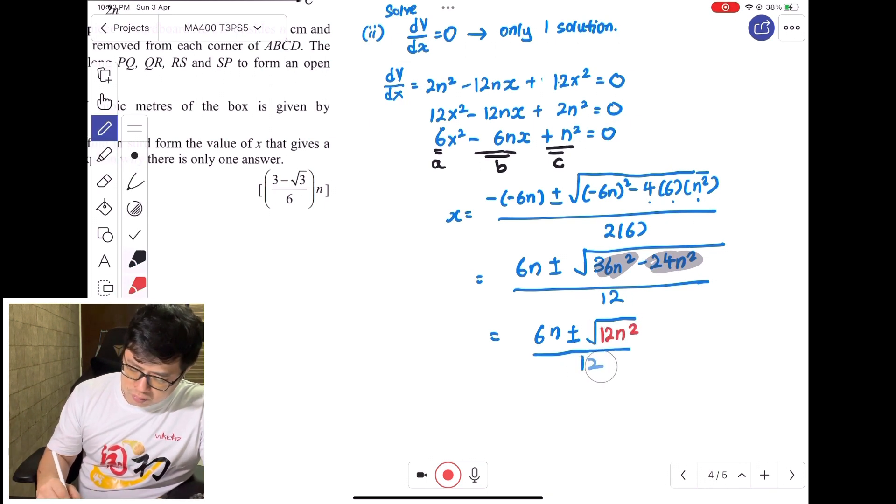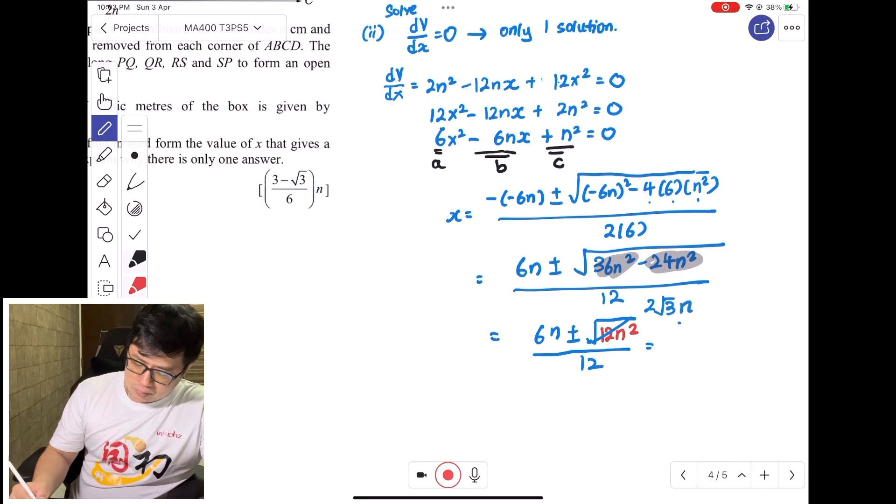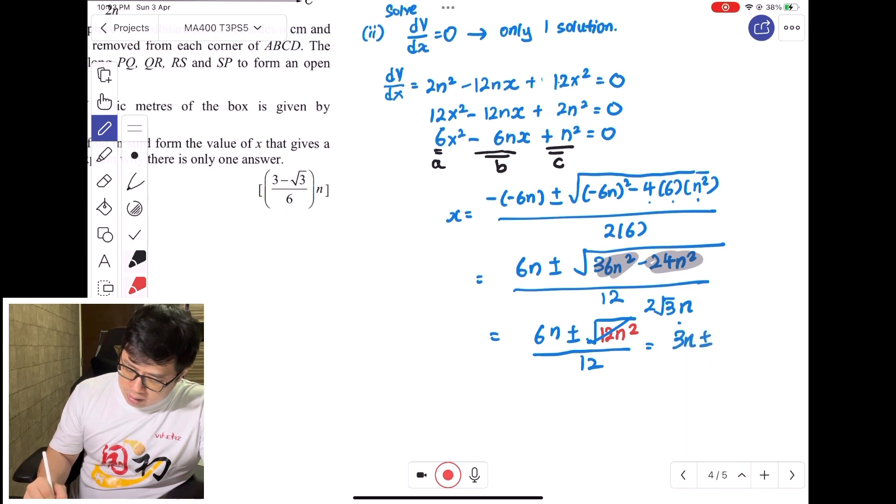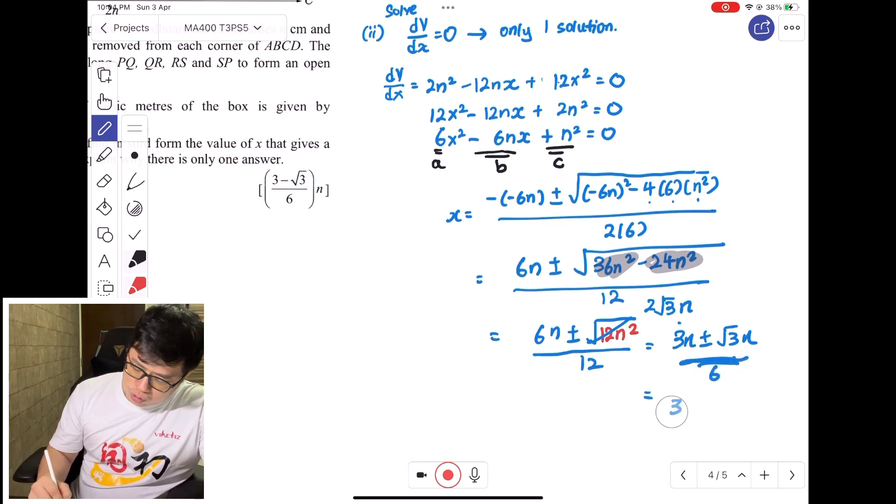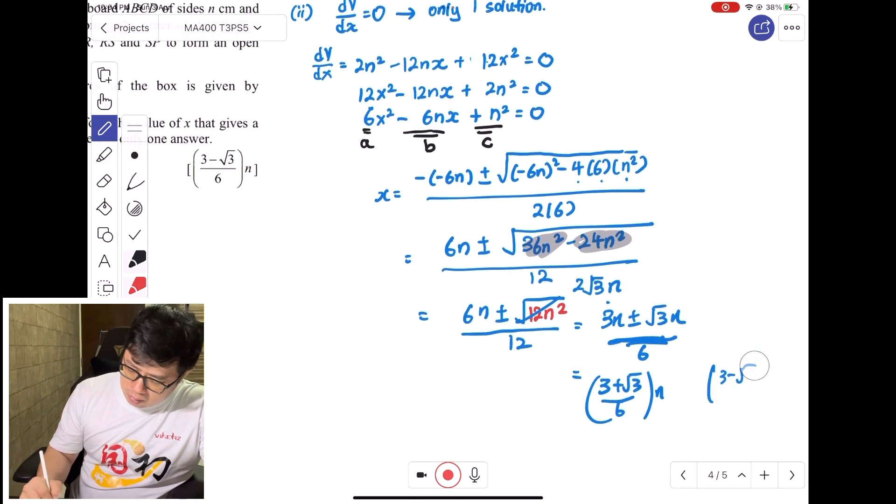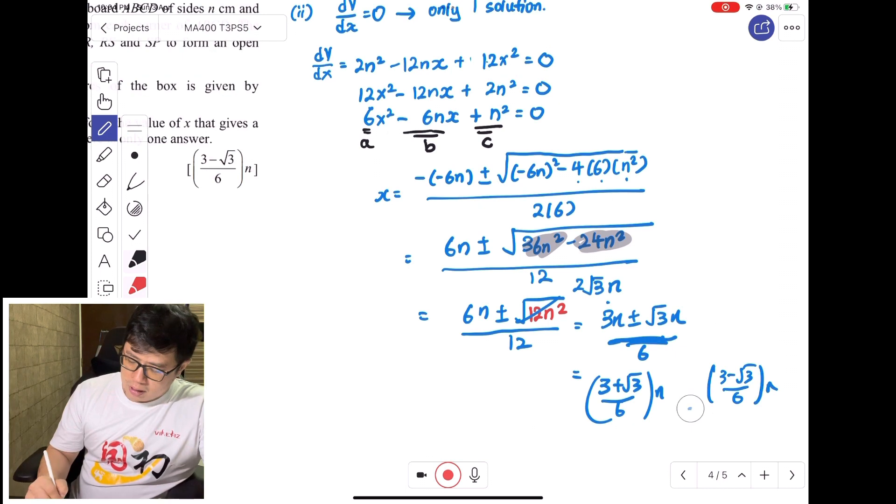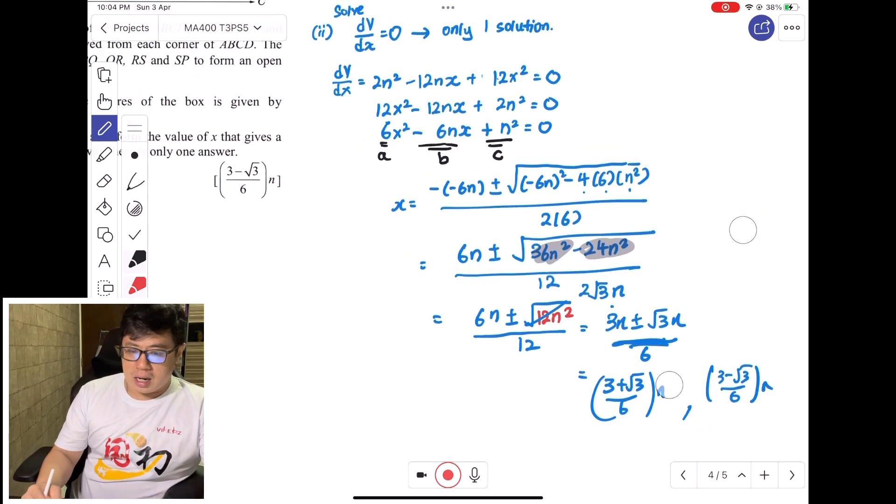I'm going to simplify further. √12 is the same as √4 times √3, which is 2√3. √N² is just N, so this gives me 6N ± 2√3N over 12, which would be 3 ± √3 over 6, times N. So X = (3 + √3)N/6 or (3 - √3)N/6. There are two possible answers.